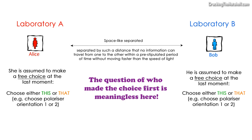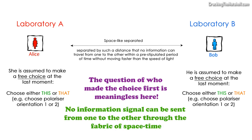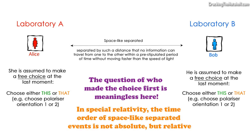According to Einstein's relativity, the fact that their laboratories are space-like separated means that their respective choices of measurement cannot in any way influence each other, because no information signal can be sent from one to the other through the fabric of space-time. In addition, note that either of their choices could be said to have happened first, because in special relativity, the time order of space-like separated events is not absolute but relative.